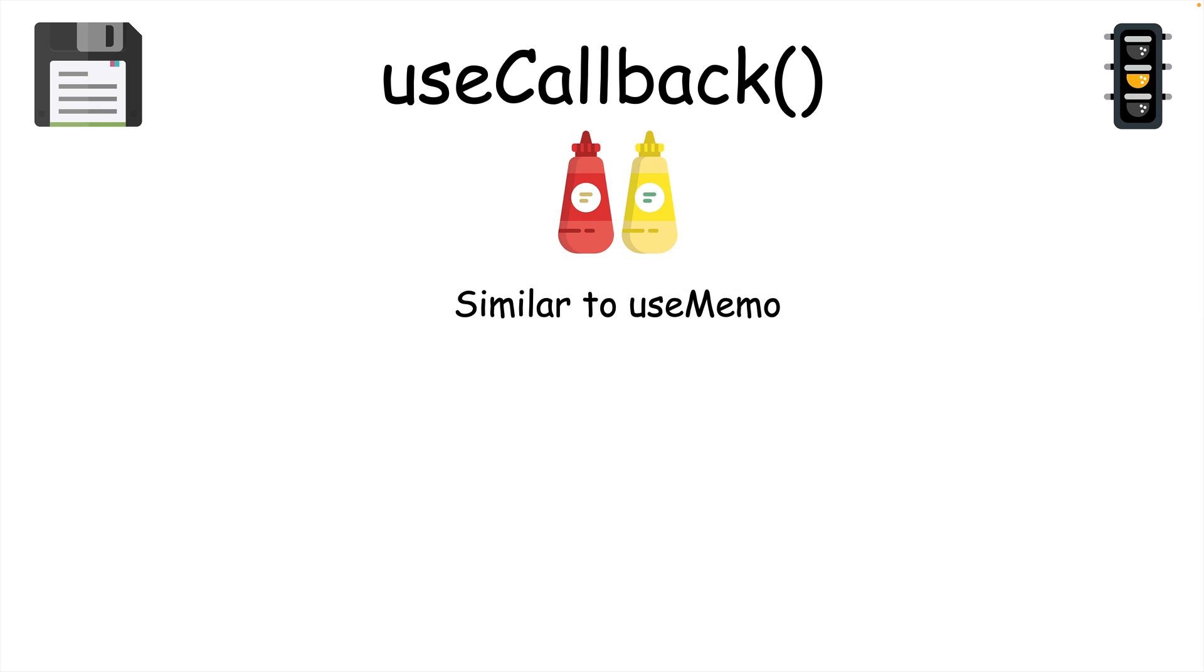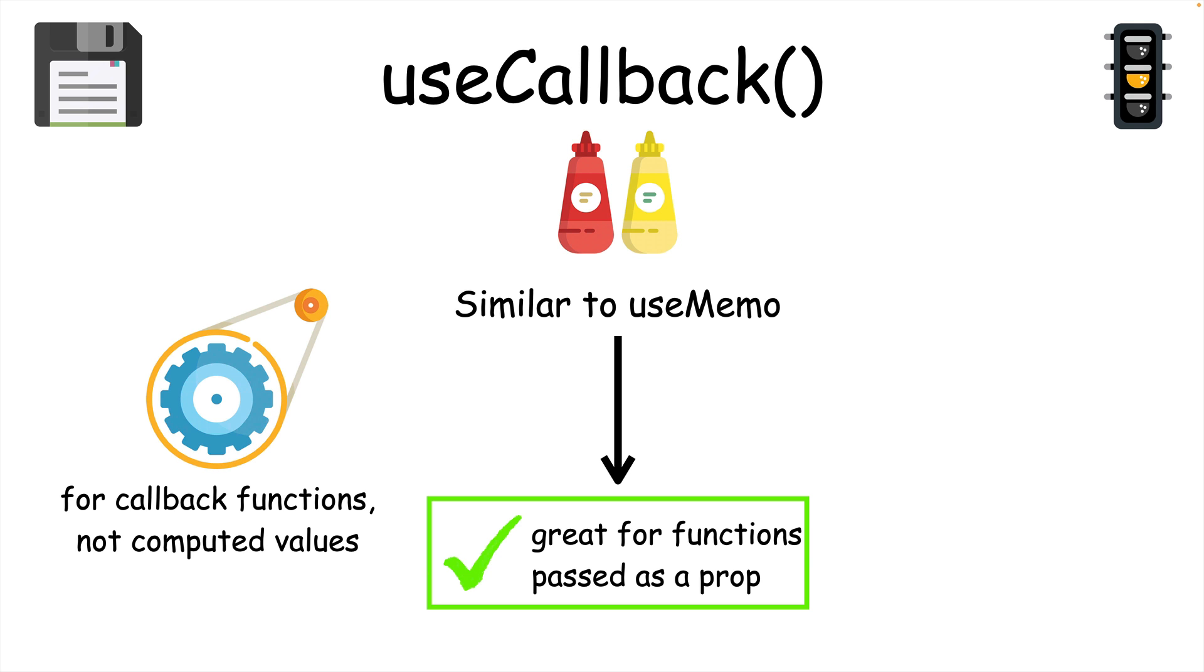Like useMemo, useCallback memoizes what's passed to it. But useCallback is different. It's for functions, specifically callback functions that are passed down to child components. This improves performance by preventing callback functions from being recreated on each rerender.